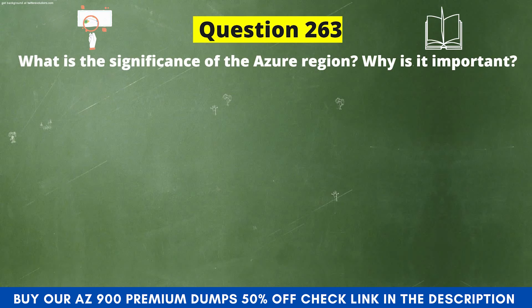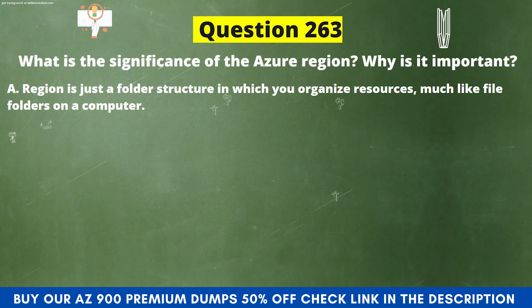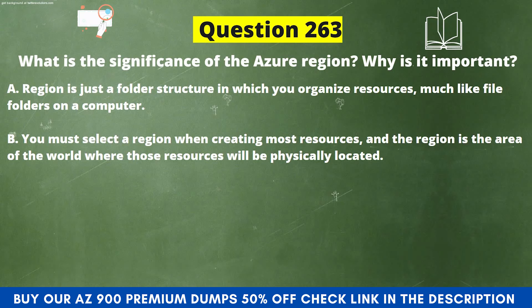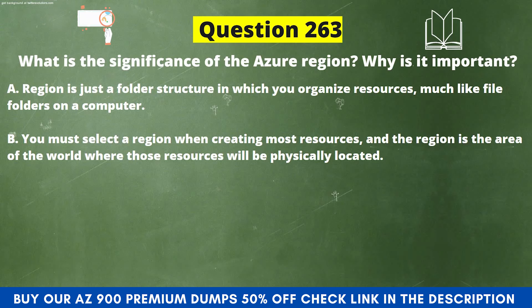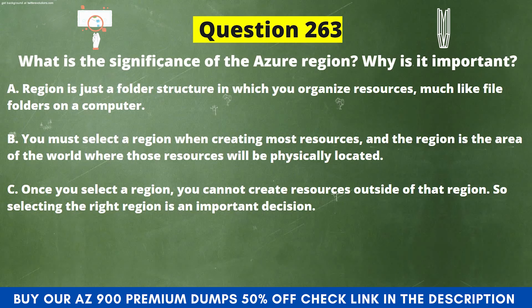What is the significance of the Azure region? Why is it important? Option A, region is just a folder structure in which you organize resources, much like file folders on a computer. Option B, you must select a region when creating most resources and the region is the area of the world where those resources will be physically located. Option C, once you select a region, you cannot create resources outside of that region, so selecting the right region is an important decision.